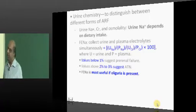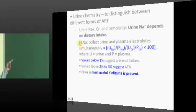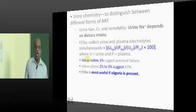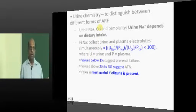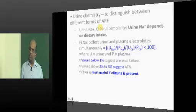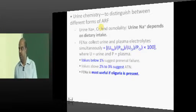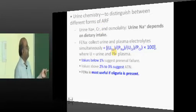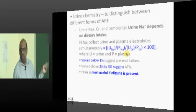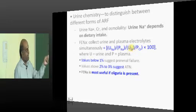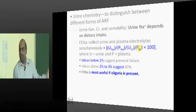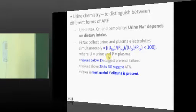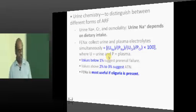Always get blood chemistry in ARF, including fractional excretion of sodium (FENa). To calculate FENa: take urinary sodium divided by plasma sodium, divided by urinary creatinine over plasma creatinine, multiplied by 100. Less than 1% is pre-renal; more than 1% is intrinsic renal failure. Normal plasma sodium is 130 to 135 mEq/L, and normal plasma creatinine is generally less than 1 mg/dL.